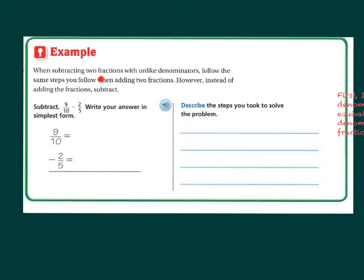Another example. When subtracting two fractions with unlike denominators, follow the same steps you'd follow when adding two fractions. However, instead of adding the fractions, you just subtract. So for example, 9 tenths minus 2 fifths. Write your answer in simplest form. So 9 tenths and 2 fifths. Well, tenths and fifths are completely different things.